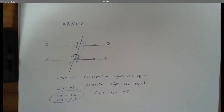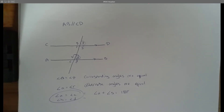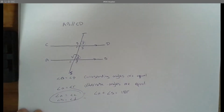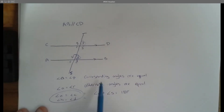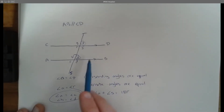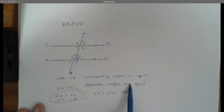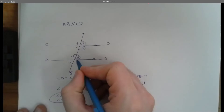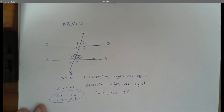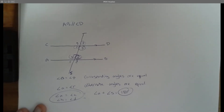The converse statements of transversal lines through parallel lines are: when two straight lines AB and CD are cut by a transversal, if the corresponding angles are equal, then AB is parallel to CD. If the alternate angles are equal, then AB is parallel to CD. And if the interior angles on the same side of the transversal — like A and S, or R and B — are supplementary, meaning they equal 180 degrees, then AB is parallel to CD. We're going to use this information to solve for some missing angles.